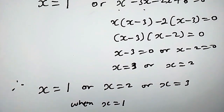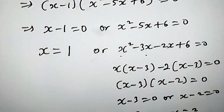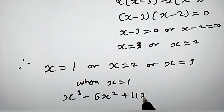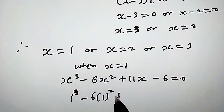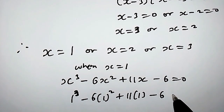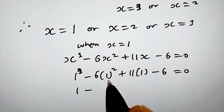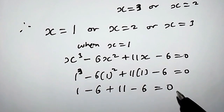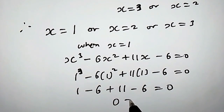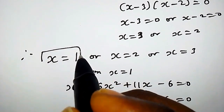When x equals 1, we plug it into the cubic equation: 1 to the power of 3 minus 6 times 1 squared plus 11 times 1 minus 6 equals 0. That gives 1 minus 6 plus 11 minus 6, which equals 0. So x equals 1 is confirmed as one of our solutions.